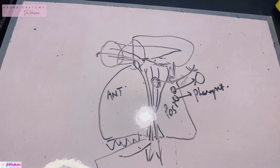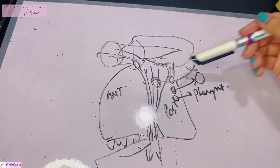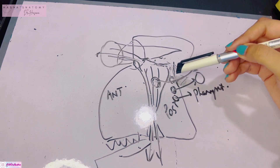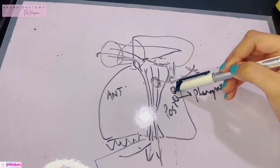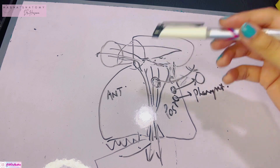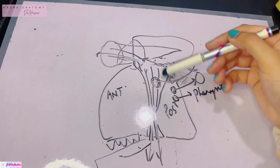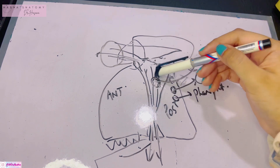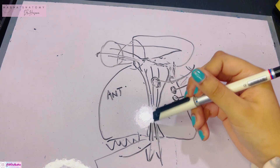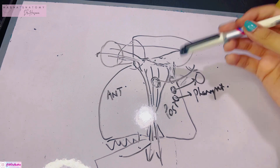Let me go through the boundaries once again. The anterior boundary is the posterior surface of the maxilla. The posterior boundary is part of the greater wing of the sphenoid and the root of the pterygoid process — this consists of three canals: the foramen rotundum, the pterygoid canal, and the palatovaginal canal. The superior part is formed by the undersurface of the body of the sphenoid bone, where you also see the inferior orbital fissure entering the orbit. The medial boundary is formed by the palatine bone with the sphenopalatine foramen, and inferiorly it is closed by the pyramidal process of the palatine bone, through which run the greater and lesser palatine canals. Laterally is the pterygomaxillary fissure.